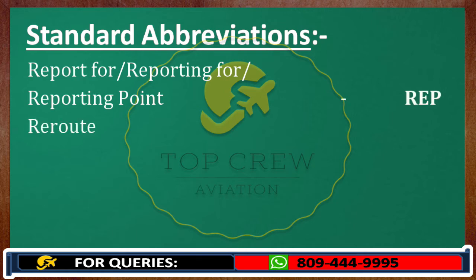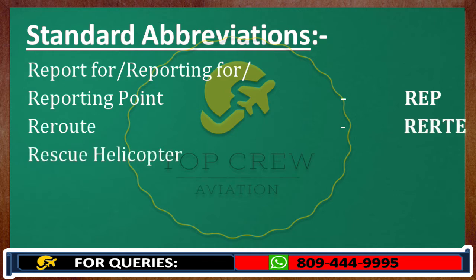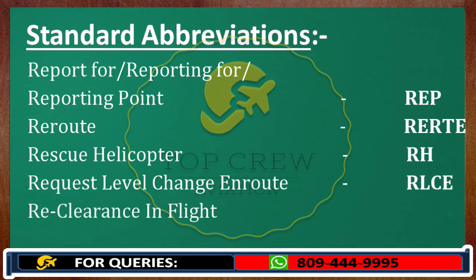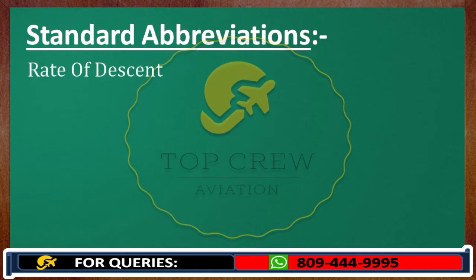Reroute: RERTE. Rescue helicopter: RA. Request level change en route: RLCE. Re-clearance in flight: RIF. Rate of descent: ROD.